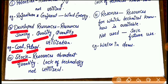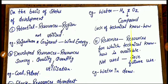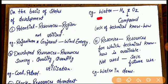The third part is Stock. What are called Stock? Resources which are found abundantly in a particular region but due to lack of technology they are not fully utilized. You can see the example of Water. Water is a compound of two gases — Hydrogen and Oxygen. When water is split into these two parts, Hydrogen can be used as a rich source of energy. But due to lack of technology we are not able to do this. So this is called Stock.